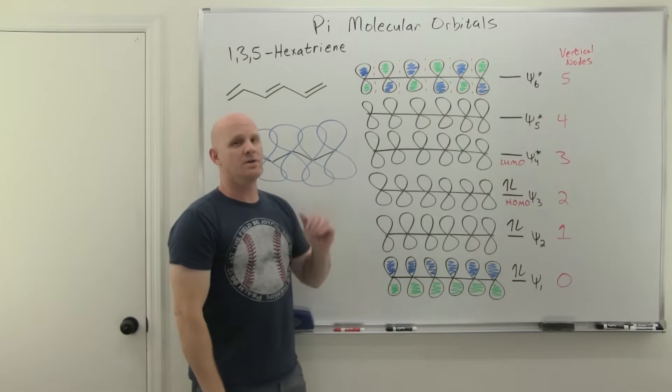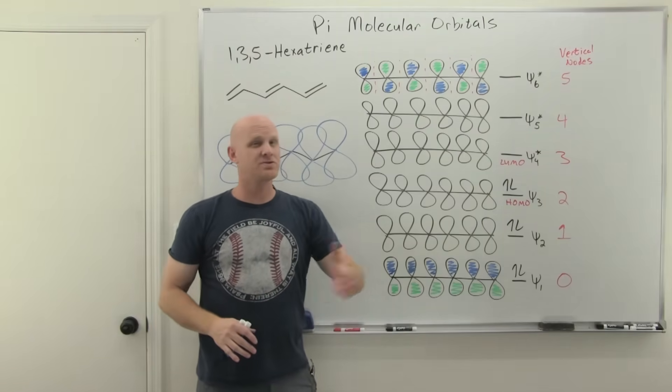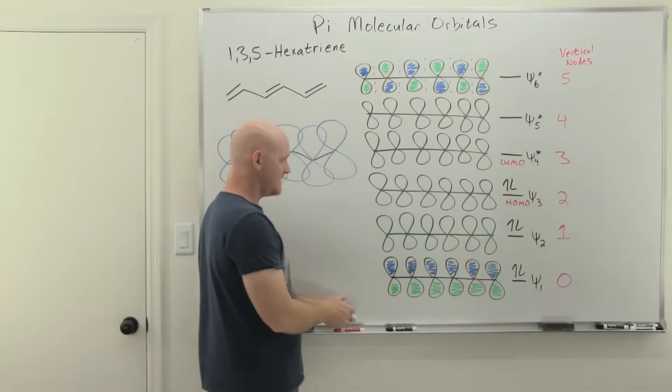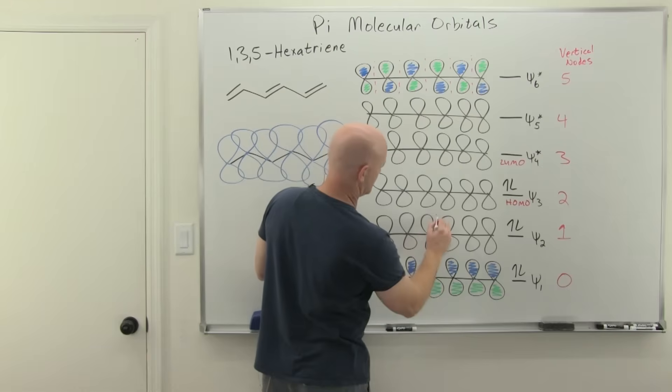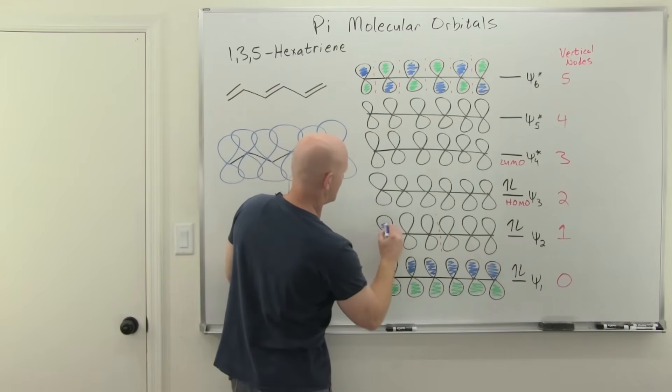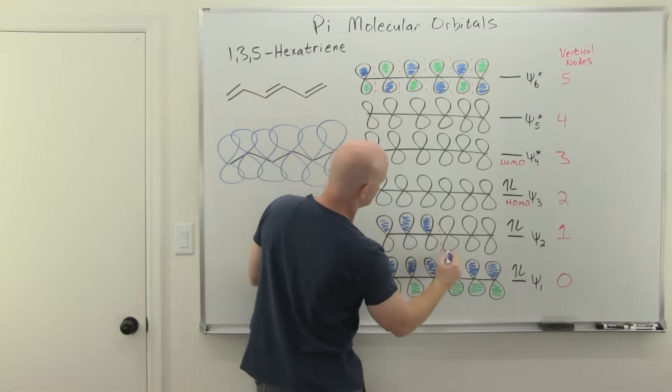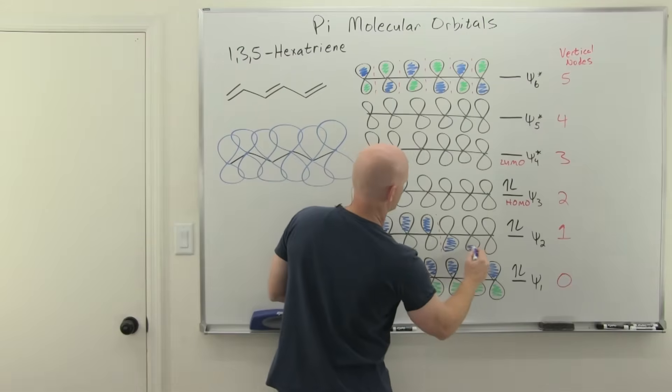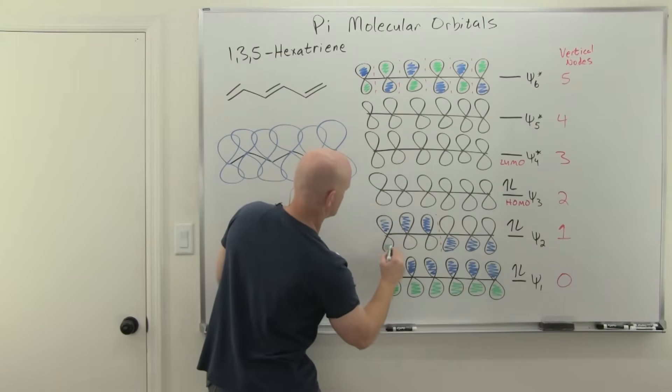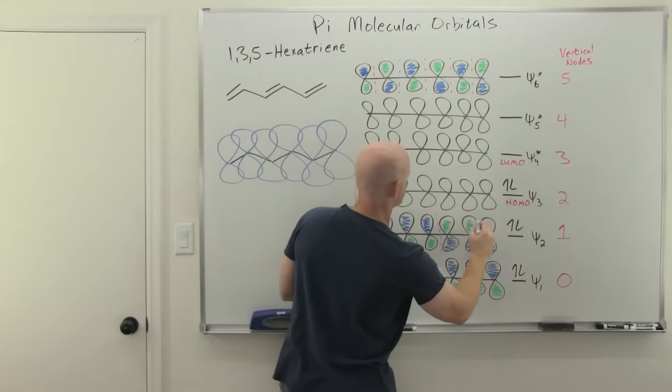Well, psi 2 needs to have one node. And as we discussed in the last lesson, if you only have one node, these nodes have to be symmetrically distributed on the diagram. So if you only have one node, it has to be right in the middle. And so if that's the case right there, right in the middle, then when you don't cross a node, your wave functions match. They're in phase. When you cross a node, you alternate, they're out of phase. So there's the MO picture for psi 2.